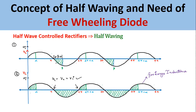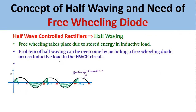This half waving is not practically possible, because if the load current is assumed constant, the time for which the energy is returned back is longer than the time for which it is stored. So practically this is not possible, but when the inductive load is very high the beta duration increases.